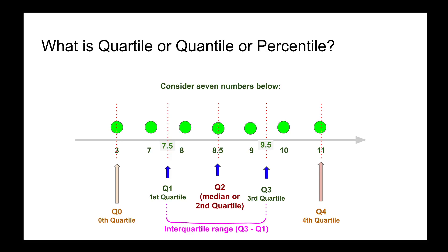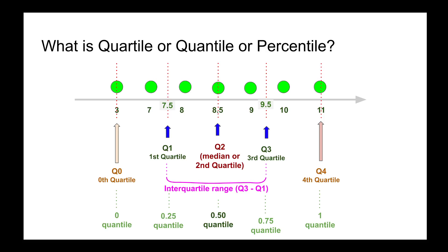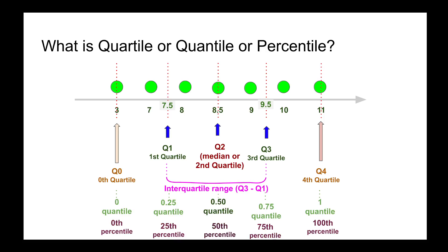We also have the 0th and 4th quartiles. Q3 minus Q1 gives us the interquartile range, which corresponds to 50 percent of the data. Up to Q1 we have the lower 25 percent, from Q3 to Q4 we have the top 25 percent. In quantile notation, the middle is the 0.5 quantile, with 0.25 and 0.75 on either side. In percentile terms, that's the 50th, 25th, and 75th percentiles.